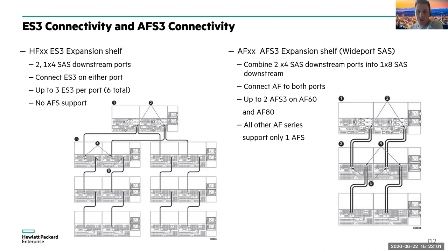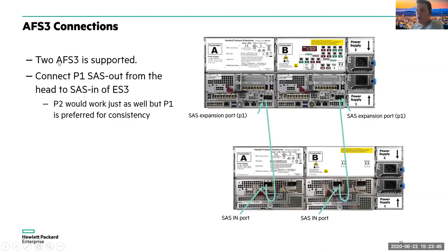All-flash systems are different — they need to support more throughput, and can support higher drive density. Instead of a single connection per controller to the shelf, you use two connections per controller, aggregating 24 GB/s of throughput per controller. The AF-60 and AF-80 support up to two expansion shelves; the smaller models support a single expansion shelf. Two connections is the recommendation even if one is technically sufficient.